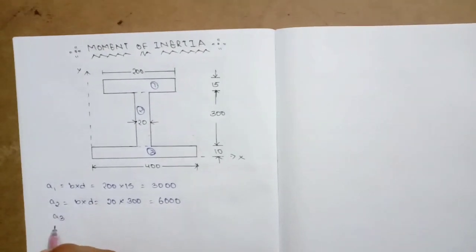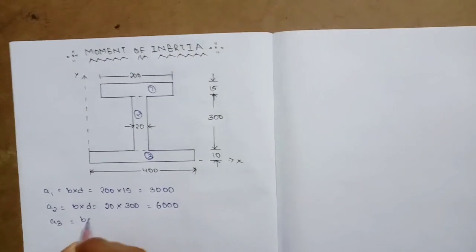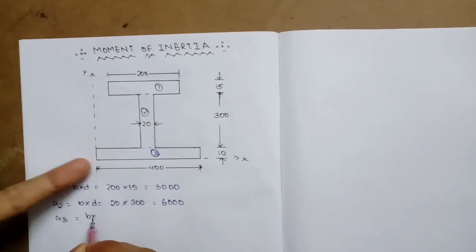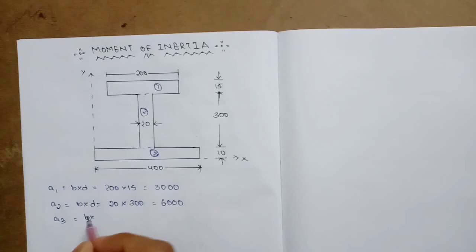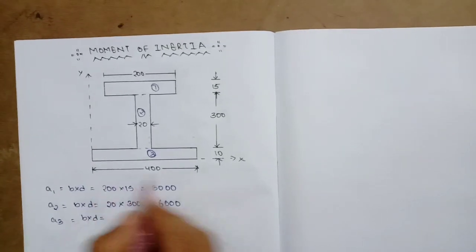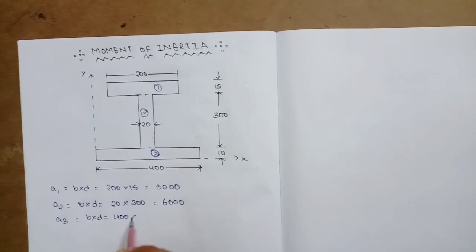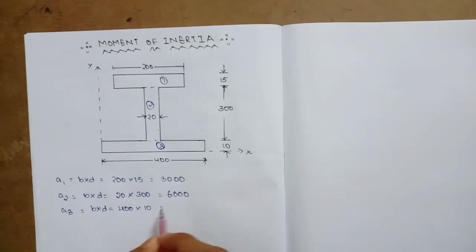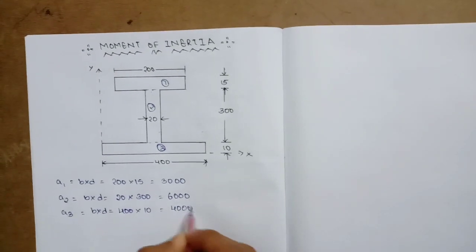Area 3 — the area of the rectangle for the bottom flange. The rectangle formula is breadth into depth. The breadth is 400 and the depth is 10, giving Area 3 equal to 4000.